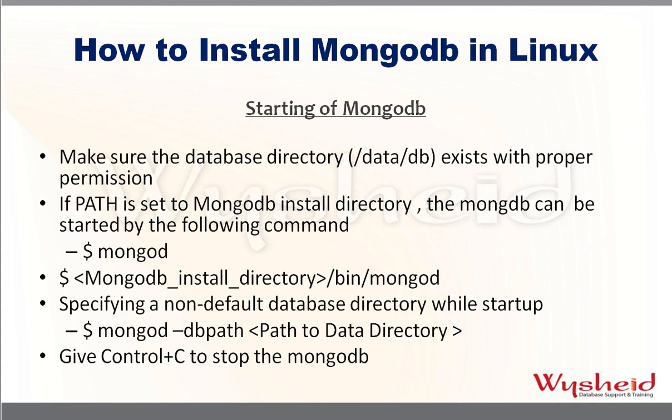If you want to use a non-default database directory, you must specify it during startup using: mongod --dbpath /path/to/db-directory. For example, if I created /testdb as my database directory, the command would be: mongod --dbpath /testdb. Once MongoDB is started, it will not return any prompt. To stop mongod, simply press Control+C to stop the MongoDB process.